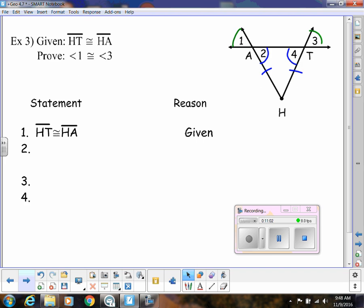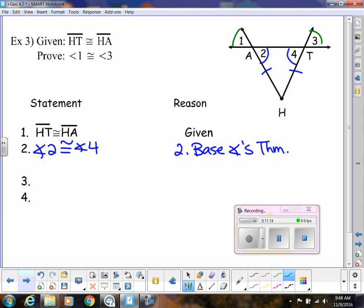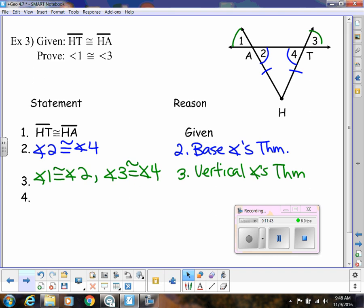So we're given HT is congruent to HA. And then we said from there, we could say angle 2 is congruent to angle 4. And that's our base angles theorem. And then we said angle 1 is congruent to angle 2 because those are vertical angles. And we also said angle 3 is congruent to angle 4. And that's vertical angles theorem.